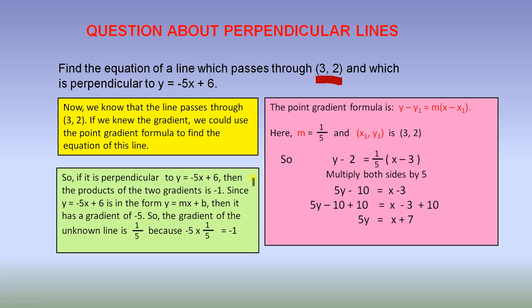So, if it is perpendicular to y = -5x + 6, then the products of the two gradients is -1. Since y = -5x + 6 is in the form y = mx + b, then it has a gradient of -5. There it is there. The gradient is -5.